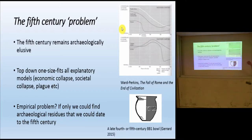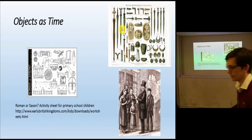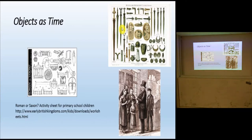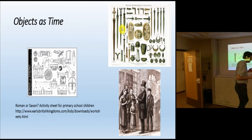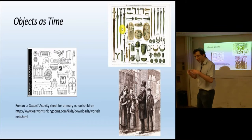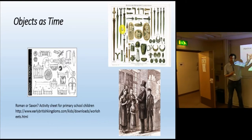But I think more fundamentally, there's a theoretical issue here, and it is about those periods — about the boundaries between our periods. It's to do with how we conceive of objects as time. We know at some level that objects are not time. But on the other hand, the way we think about the past often uses objects as proxies for time. Here we've got Thomson, the inventor of the Three-Age system — iron, bronze, and stone — and these objects become proxies for periods of time.